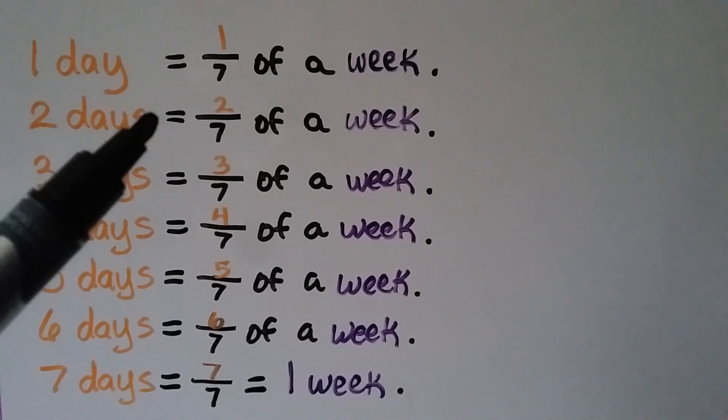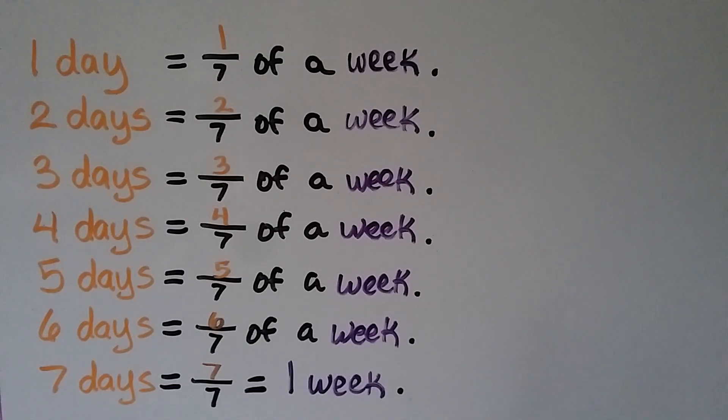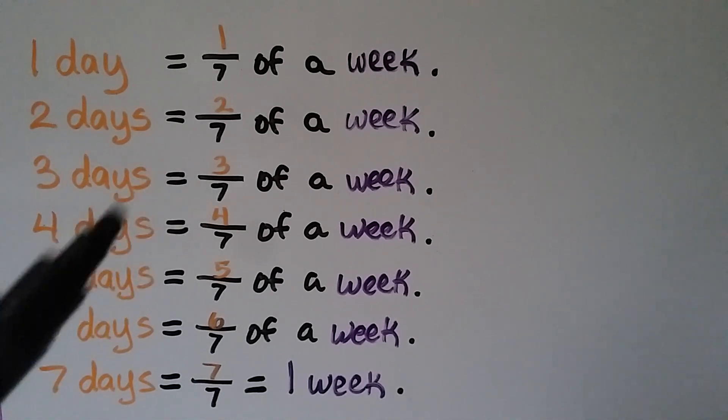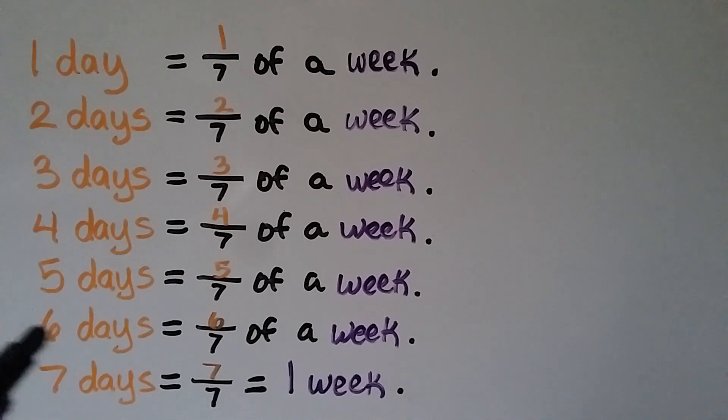1 day is 1/7th of a week. It's 1 of 7 equal parts. So 2 days would be 2 of 7 equal parts, it would be 2/7ths of a week. 3 days would be 3/7ths. 4 days would be 4/7ths. We have 5 days as 5/7ths, 6 days as 6/7ths. And 7 days, because there are 7 days in 1 week, would be 7 days out of the 7. Same numerator and denominator. We have 1 full week.